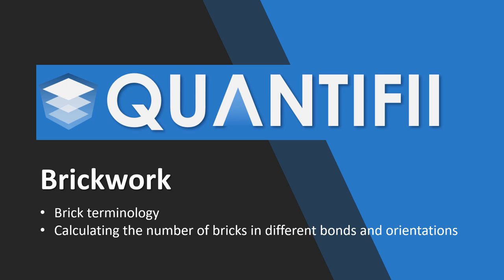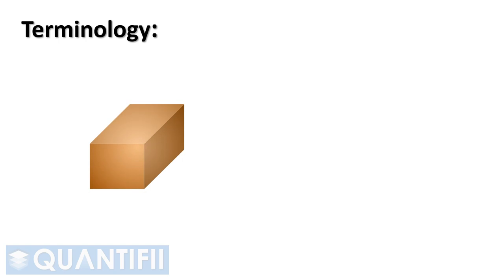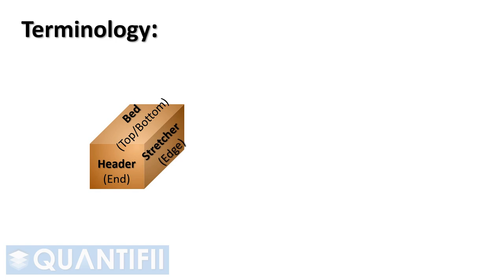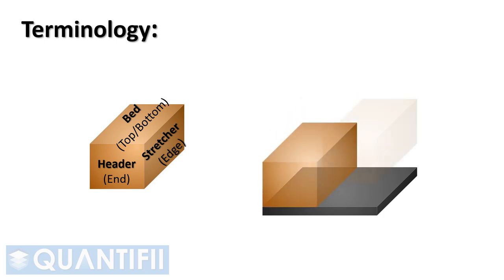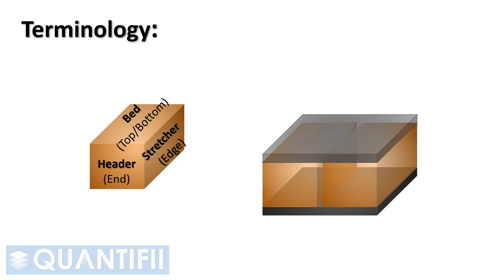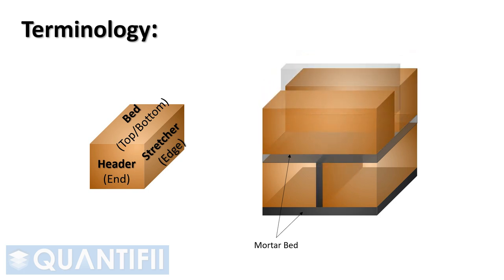Before we start, let's briefly touch on some brickwork terminology. The top and bottom surfaces of a brick are known as beds. Ends or narrow surfaces are called headers or header faces. Sides or the long surfaces are called stretchers or stretcher faces. Mortar between bricks placed horizontally under or above the bed of the brick is referred to as the mortar bed.